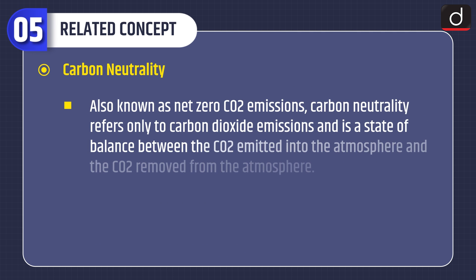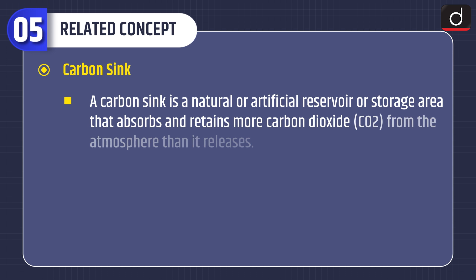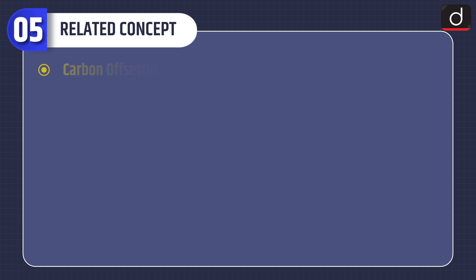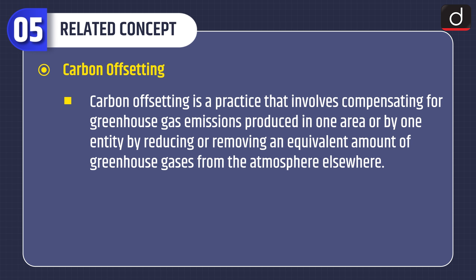Second, carbon neutrality: also known as net zero carbon dioxide emissions, carbon neutrality refers only to carbon dioxide emissions and is a state of balance between the carbon dioxide emitted into the atmosphere and the carbon dioxide removed from the atmosphere. Third, carbon sink: a natural or artificial reservoir that absorbs and retains more carbon dioxide from the atmosphere than it releases. Examples of natural carbon sinks include forests, oceans, wetlands, and grasslands. Fourth, carbon offsetting: a practice that involves compensating for greenhouse gas emissions produced in one area by reducing or removing an equivalent amount of greenhouse gases from the atmosphere elsewhere.